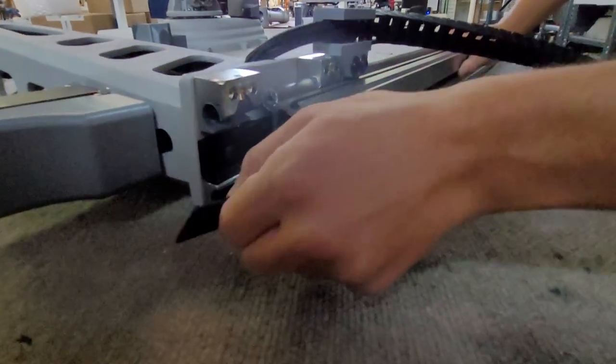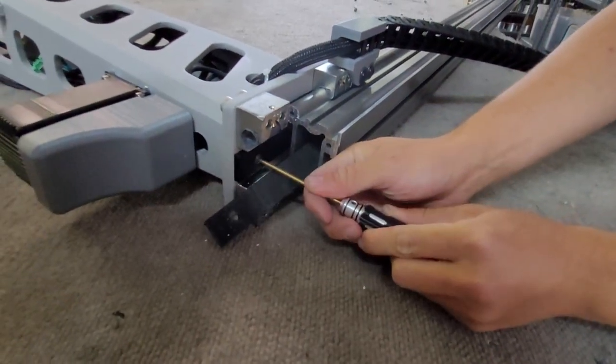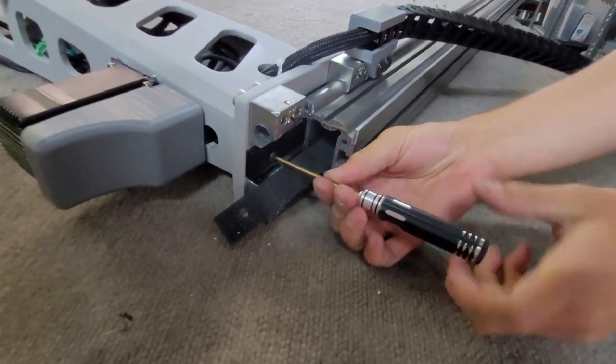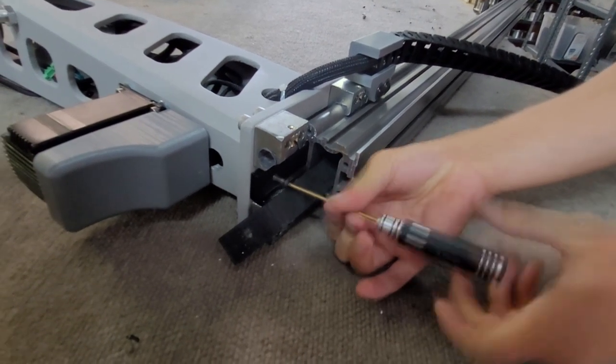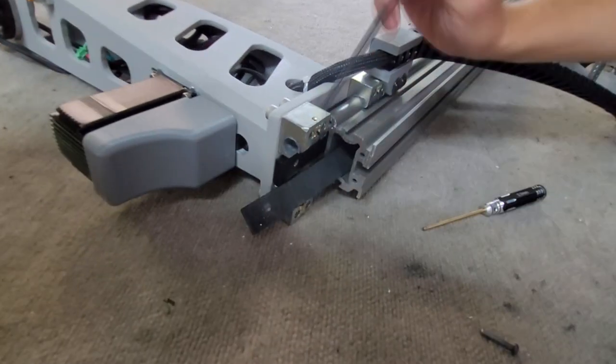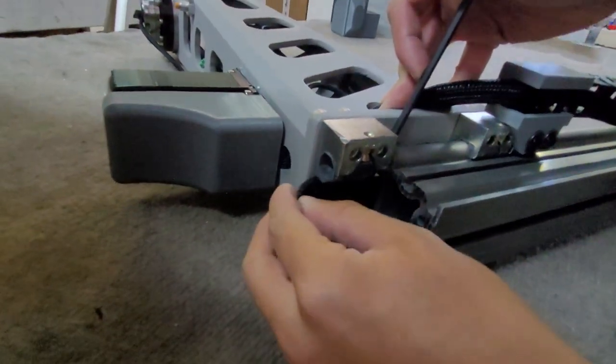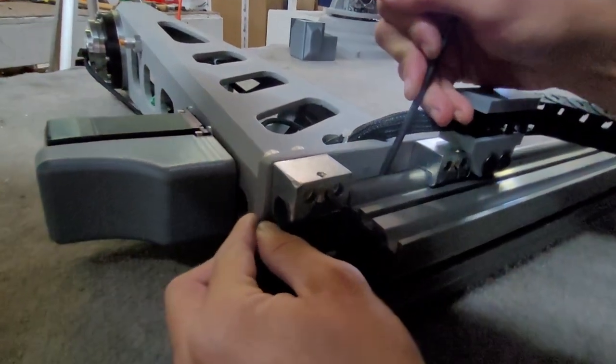With the belt through the Z-rail, we will now secure it to the belt holder. You will need to unscrew the holder and insert the belt. You can use an Allen key or screwdriver to slightly pry up the holder. Insert the belt so that the pre-made hole lines up with the screw hole and then reinsert the screw.